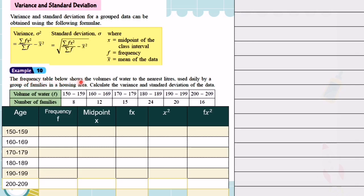The frequency table below shows the volumes of water to the nearest liters used daily by a group of families in a housing area. Calculate the variance and standard deviation of the data. We fill in the frequency and calculate the midpoint using lower limit plus upper limit divided by 2 to obtain values such as 154.5, and similarly for the other classes.